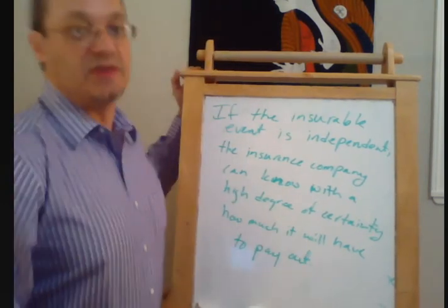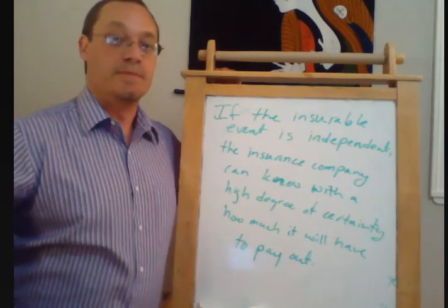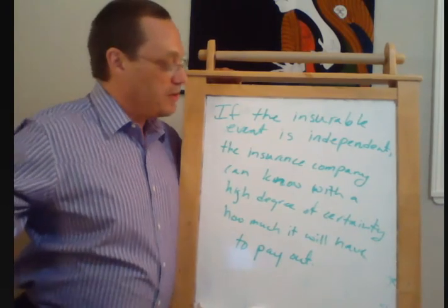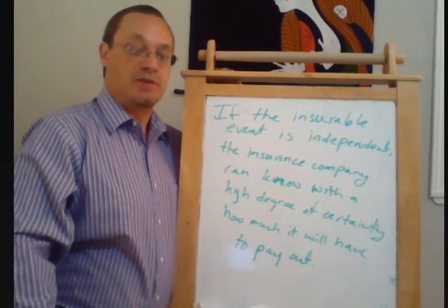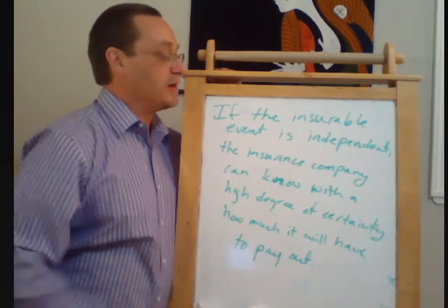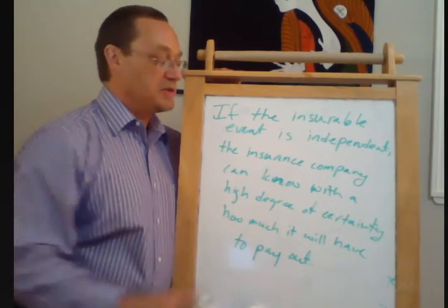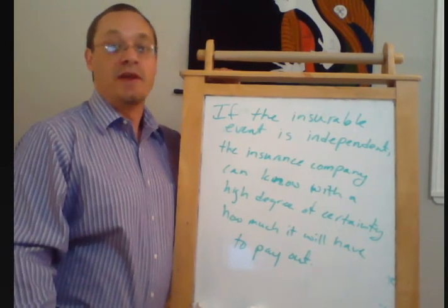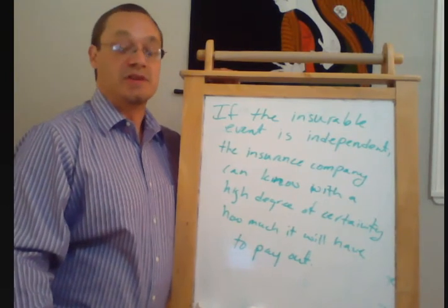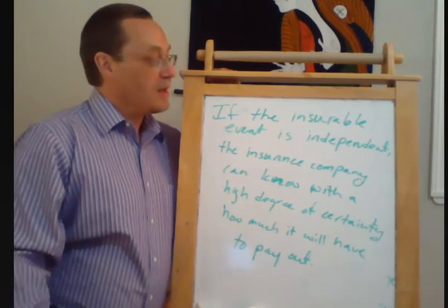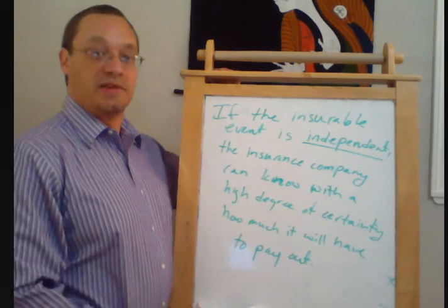To go back to the issue of risk versus uncertainty: if we have a large enough number of people, we're pretty sure we know what fraction of them will get a certain medical condition or what their average length of life will be. So essentially, once you have enough tries — once you have enough people that you're insuring — the actual riskiness of running an insurance company becomes very low. This is all built on the assumption that things are independent.